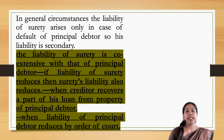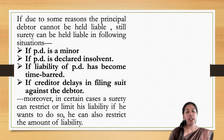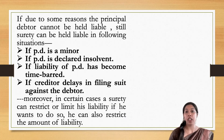The liability of the surety is co-extensive with that of the principal debtor under Section 128 of the Indian Contract Act 1872. Whenever the principal debtor is liable, the surety will be liable — and it is always secondary. When the creditor recovers part of his loan from the principal debtor's property, the principal debtor's liability reduces and the surety's liability also reduces. However, even if the principal debtor cannot be held liable, the surety can still be held liable if: the principal debtor is a minor, the principal debtor is declared insolvent, the liability has become time-barred, or the creditor delays in filing a suit against the debtor.